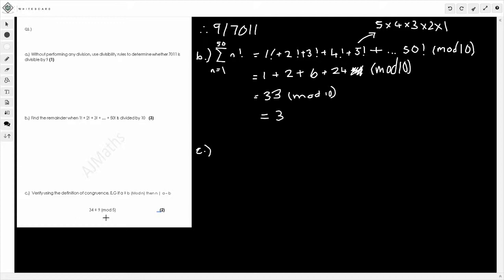And then finally, let's take a look at C. Part C, we've got to verify using the definition of congruence. E.g., if A is congruent to B mod N, then N divides the difference of A minus B. So we've got here, we've got to verify that 34 is congruent to 9 mod 5. Using this definition here, all we're going to do is work that out. My N is going to be 5 for this question. It's mod 5. So therefore, 5 must divide this difference of A minus B.